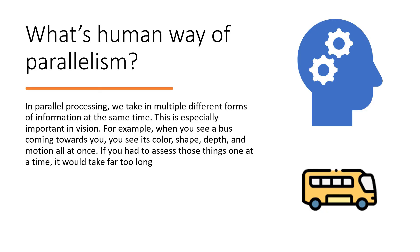If you had to see all those things only one at a time — first time only the color, second time only the shape, third time only the depth, fourth time only the motion — it would be a disastrous way of doing things and would take a very long time. We have the capacity to see all at once, and that's what is called parallelism.